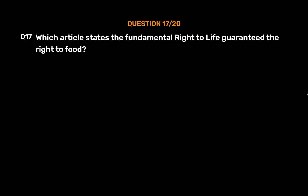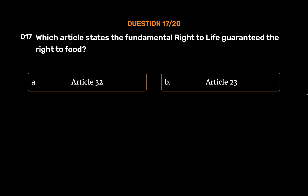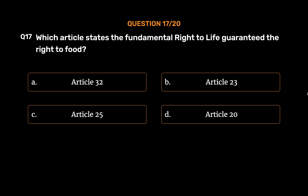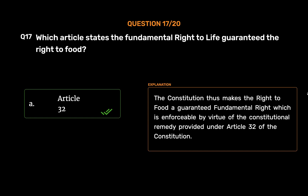Question No. 17. Which article states the fundamental right to life guaranteed the right to food? Option A: Article 32. Option B: Article 23. Option C: Article 25. Option D: Article 20. The correct answer is Option A: Article 32. The Constitution makes the right to food a guaranteed fundamental right which is enforceable by virtue of the constitutional remedy provided under Article 32 of the Constitution.